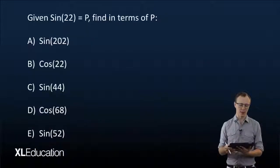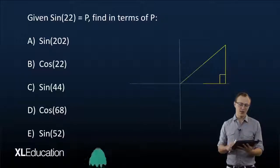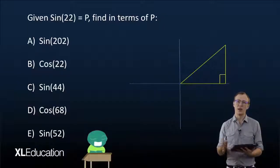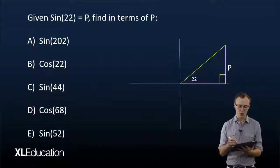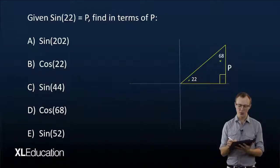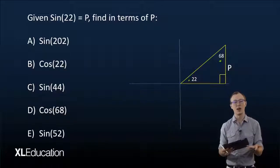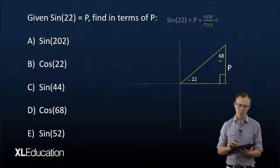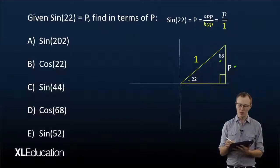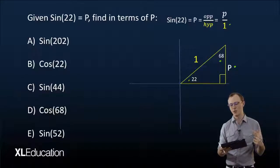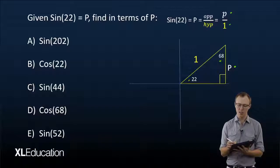The first thing we do is draw a triangle in quadrant 1, because 22° is an angle in quadrant 1. We populate it with the information we have: 22° is the given angle, and we can find the other angle, 68°, because angles in a triangle add up to 180°. We can put in the opposite side as P and the hypotenuse as 1, because sine equals opposite over hypotenuse, and P can be written as P over 1.